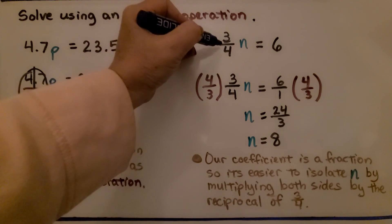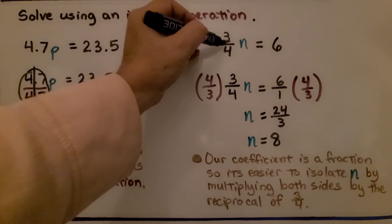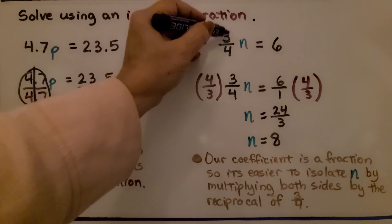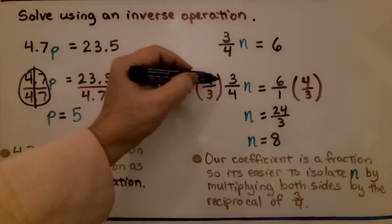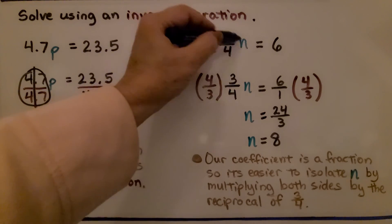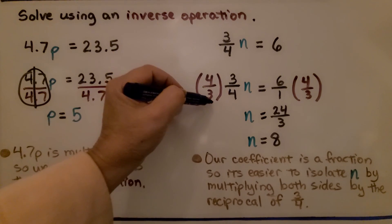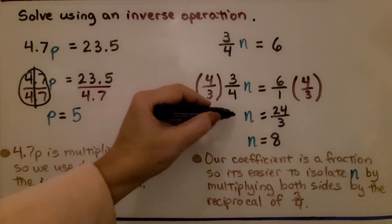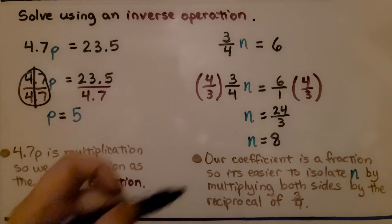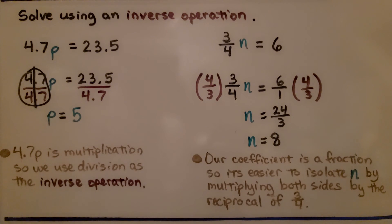For 3 fourths n equals 6: when the coefficient of n is a fraction like 3 fourths, we can multiply both sides by its reciprocal, 4 thirds. On the left, we get 12 twelfths n, which equals 1n. On the right, 4 thirds times 6 gives 24 over 3, which simplifies to 8. So n equals 8.